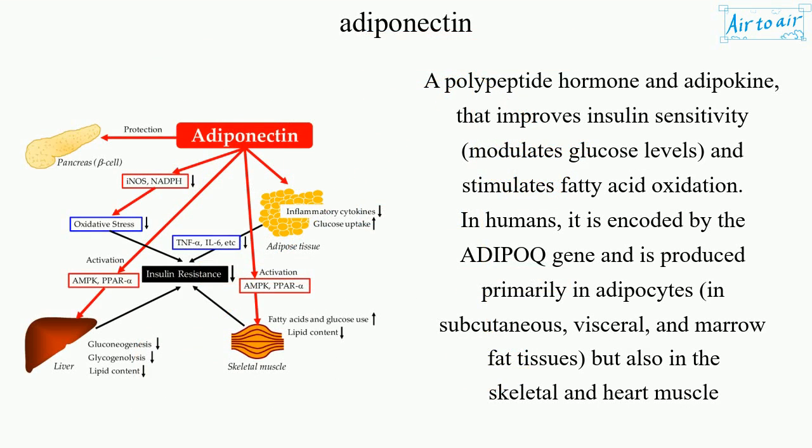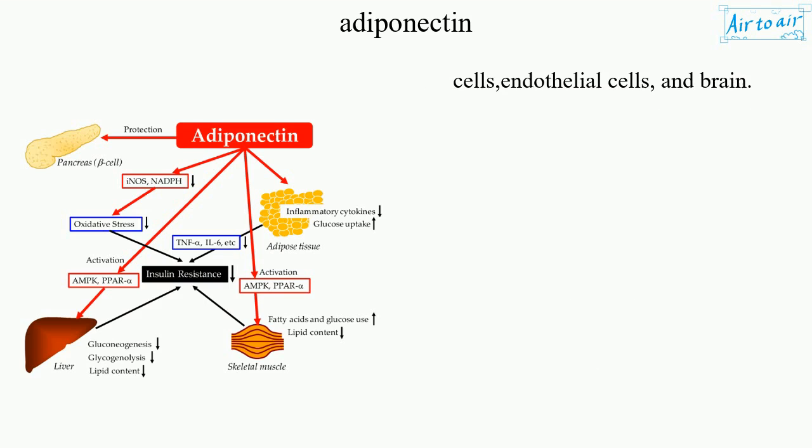Adiponectin is a polypeptide hormone and adipokine that improves insulin sensitivity, modulates glucose levels, and stimulates fatty acid oxidation. In humans, it is encoded by the ADIPOQ gene and is produced primarily in adipocytes in subcutaneous, visceral, and marrow fat tissues, but also in skeletal and heart muscle cells, endothelial cells, and the brain.